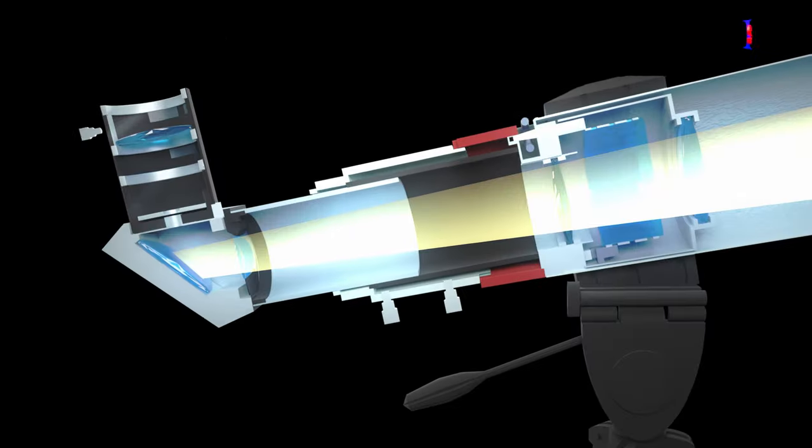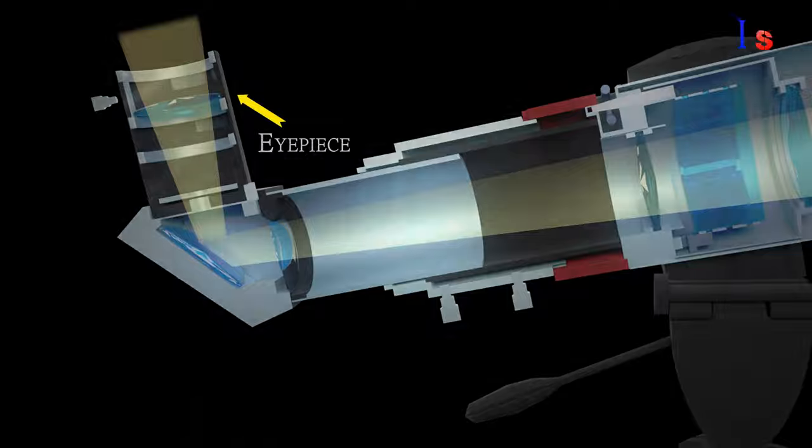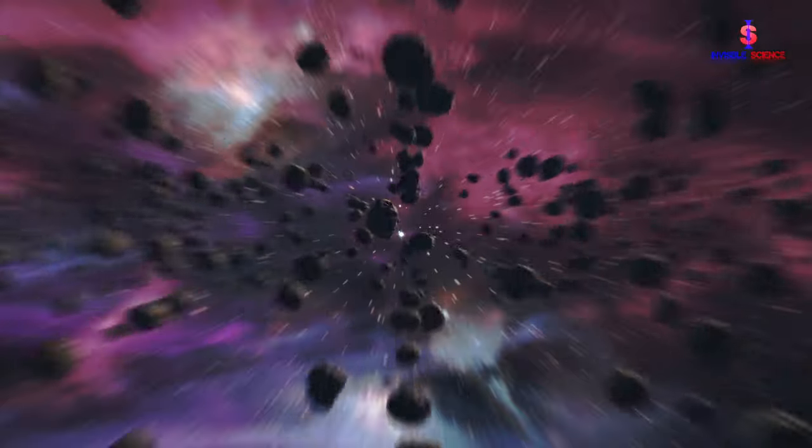Surface mirror reflects light at right angle to the eyepiece. A viewer uses the eyepiece to see a clear and focused image of the distant object.